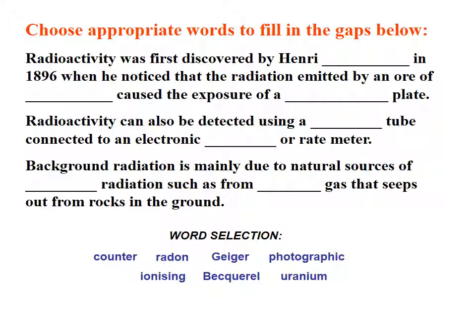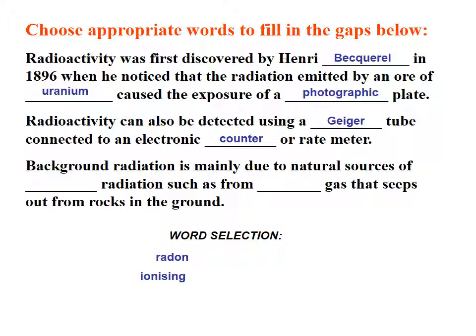So just to complete this section before we move on to the next one around half-life, radioactivity was first discovered by Henry Becquerel in 1896 when he noticed that the radiation emitted by an ore of uranium caused the exposure of a photographic plate. Radioactivity can also be detected using a Geiger tube connected to an electronic counter or rate meter. And background radiation is mainly due to natural sources of ionizing radiation, such as from radon gas that seeps out from rocks in the ground.